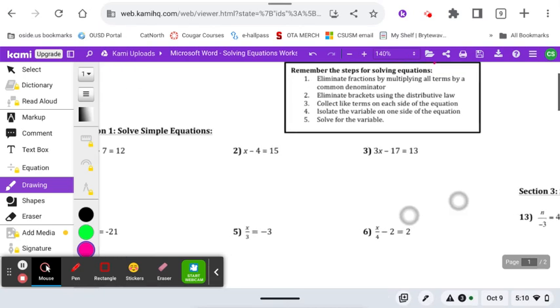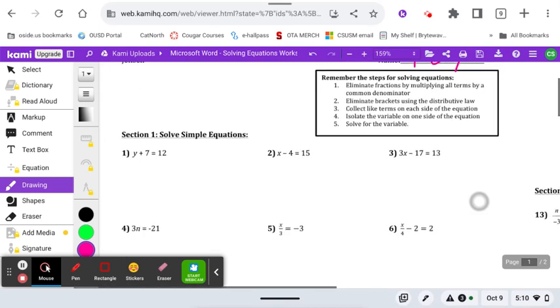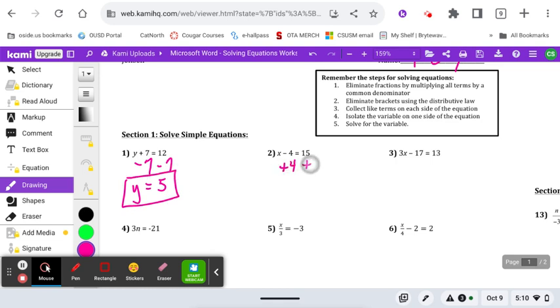We're starting with solving equations with just one step, two step, and then we'll see at what point you get stuck and need some assistance. Here we've got a plus seven, so opposite of plus seven is minus seven. Here we've got a minus four, so opposite of minus four is plus four.